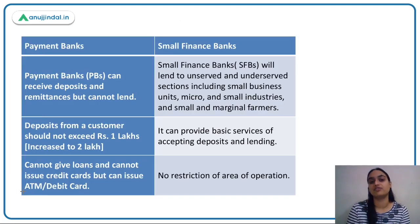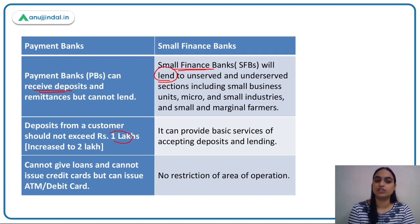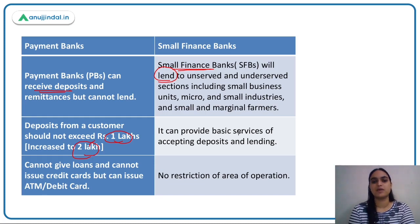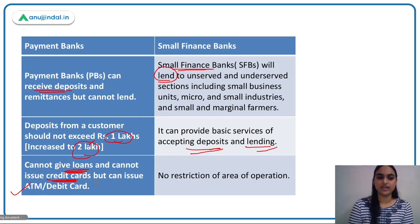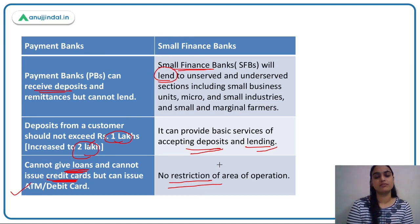Both payments banks and small finance banks cater to small sections of society, but small finance banks lend to them whereas payments banks can only accept deposits — they cannot lend. Payments banks were earlier allowed to have deposits of up to one lakh rupees, which was later increased to two lakh rupees. Small finance banks can both accept deposits and lend, with no such restriction on their area of operations. This is the major point of difference between the two types of banks.